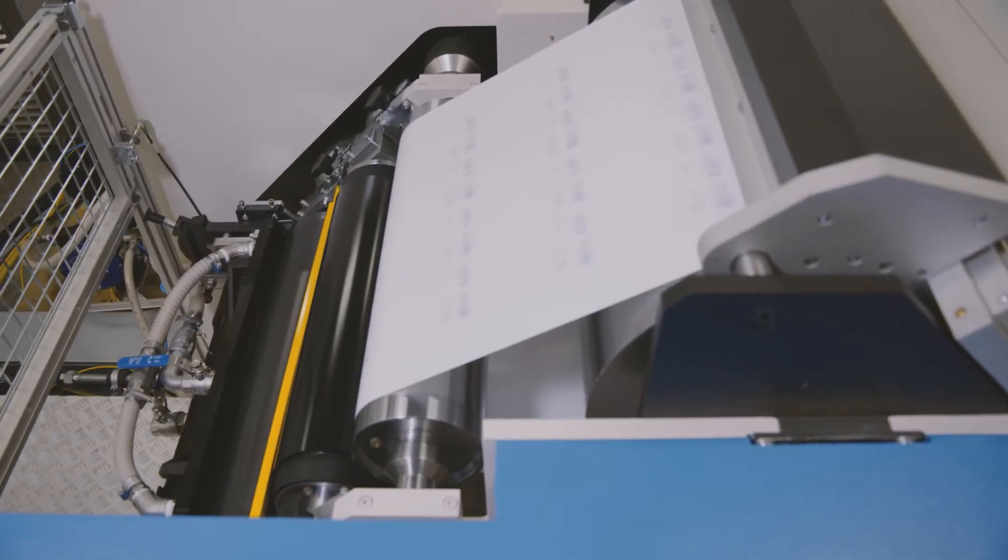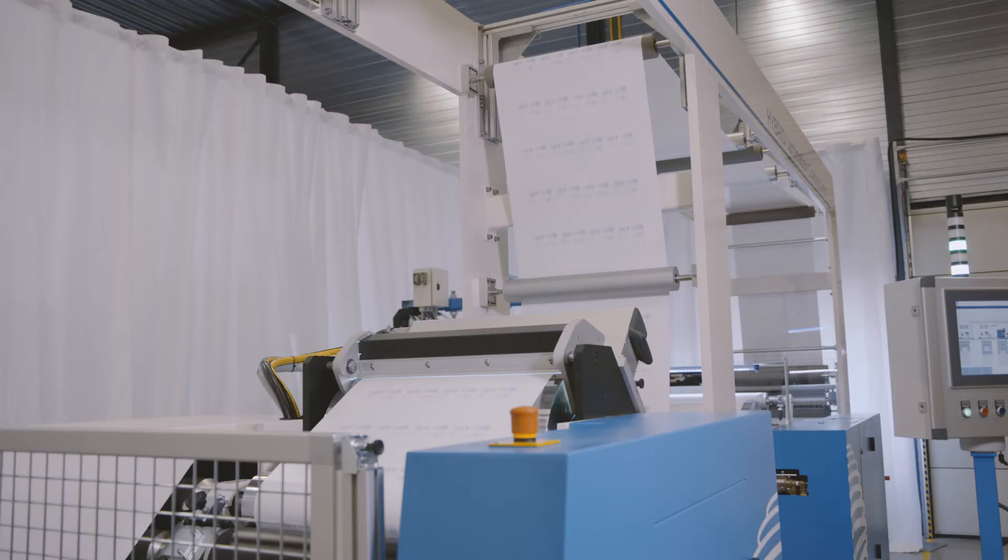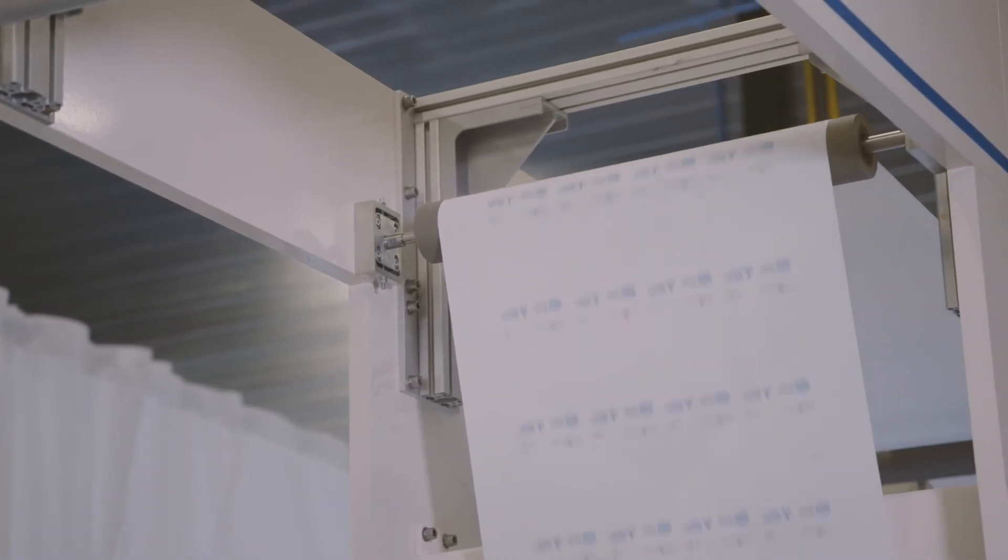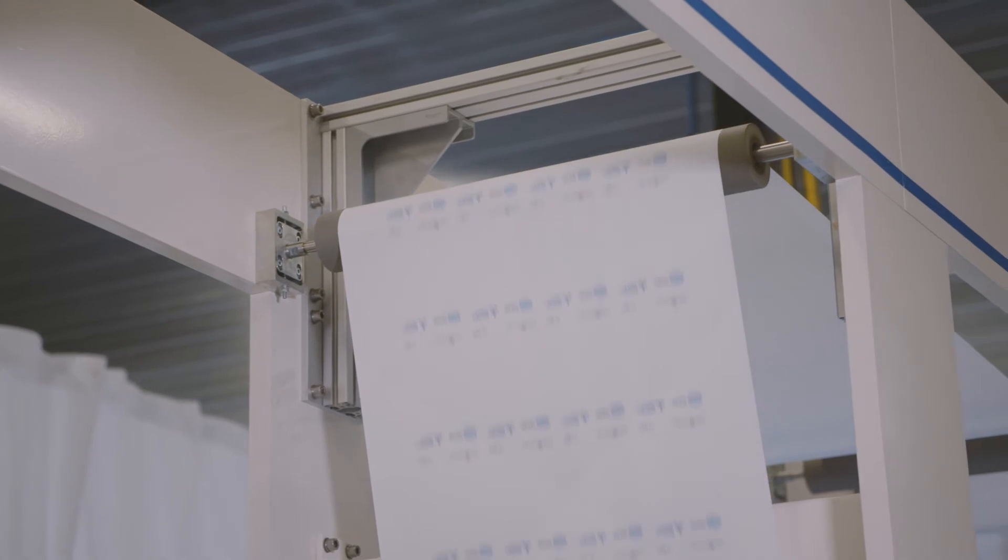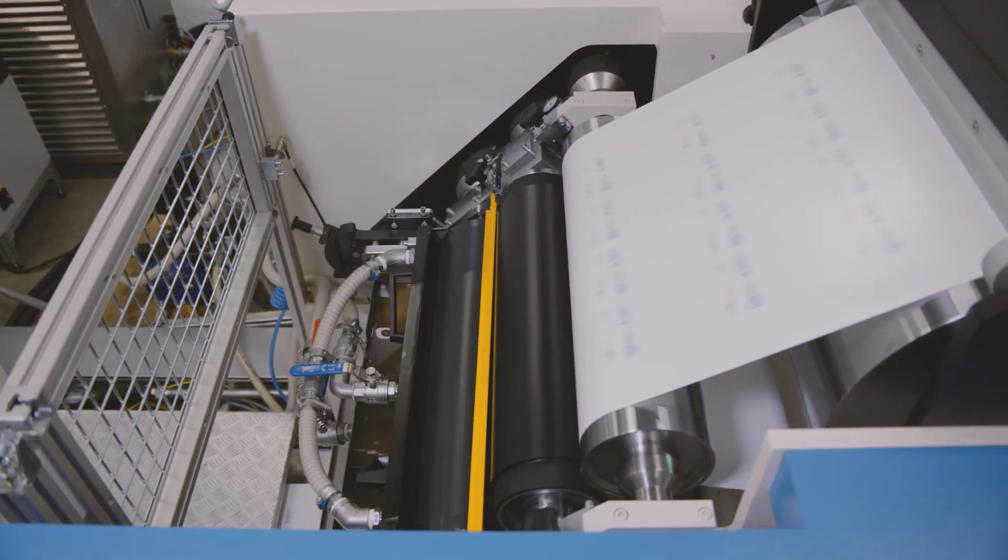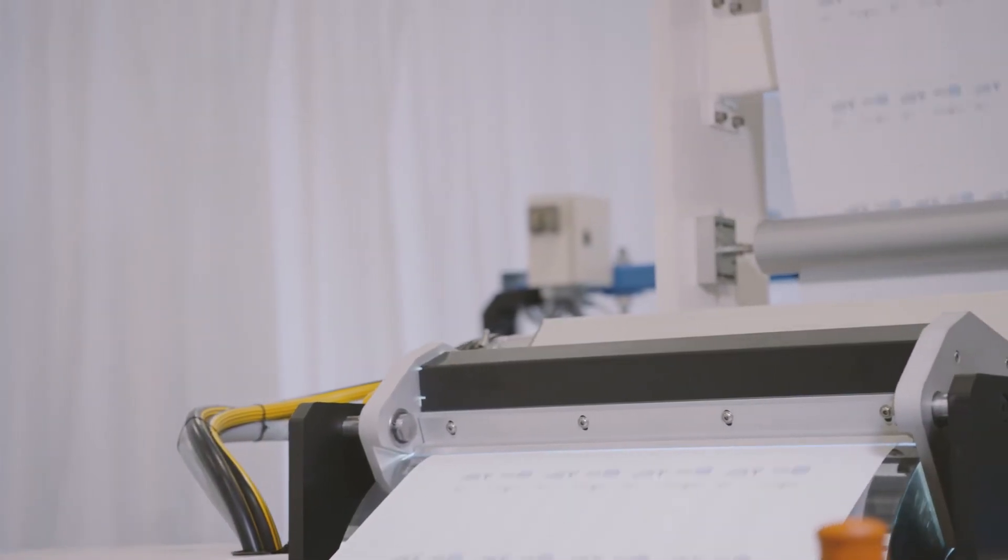After pre-treatment, the label strip is fed into the silicon coating station, where a three-roller system equips the material with a silicon coating. For a lower coating weight, the module can optionally be fitted with a five-roller system.